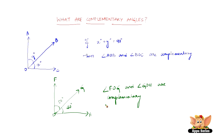Because the two angles add up to 90 degrees — 40 plus 50 — so these are complementary angles.